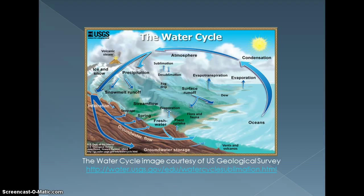The water cycle, or the hydrological cycle, follows the transformation of water from solid to liquid to gaseous form and around and around again and again. The water cycle involves the movement of water through the biosphere. By volume, some 96.5% of the Earth's water is stored in the oceans, and the ocean supplies some 90% of evaporation in the water cycle.